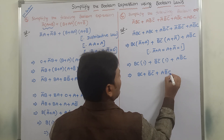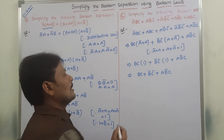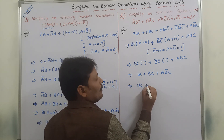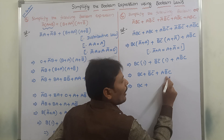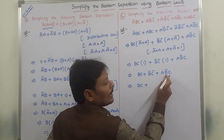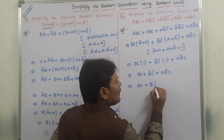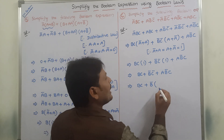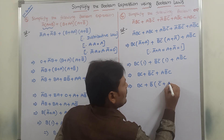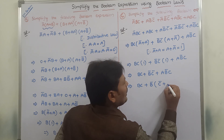B·C·1 is nothing but B·C, plus B-bar·C-bar, plus A·B-bar·C. Now we are separating B-bar from these two terms: B-bar·C-bar and A·B-bar·C both contain B-bar. After separating B-bar we get B-bar·(C-bar plus A·C).